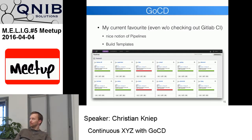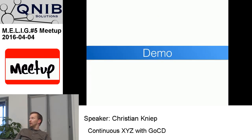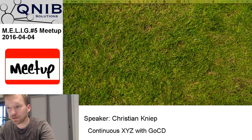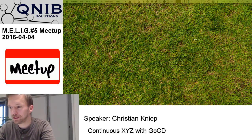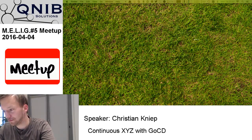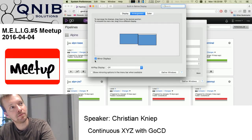What I'd like to look at but haven't, since I hooked with GoCD, is GitLab CI. It seems very cool if you use GitLab — it's open source on-premise GitHub — because it integrates nicely with pull requests and build branches. If you use GitLab, you might want to use this. But today I want to talk about GoCD, my current favorite.